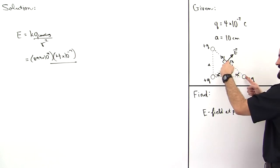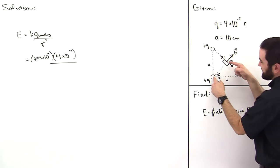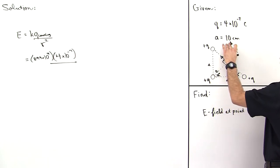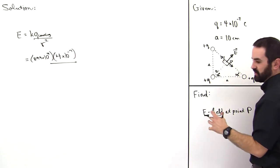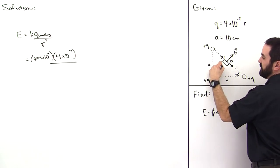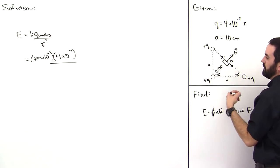So if this distance is a square root 2 over 2, that means this distance is a square root 2 over 2. And if you calculate that, you will get, plugging in 0.1 meters because 10 centimeters is equal to 0.1 meters, you'll get 0.07 meters.